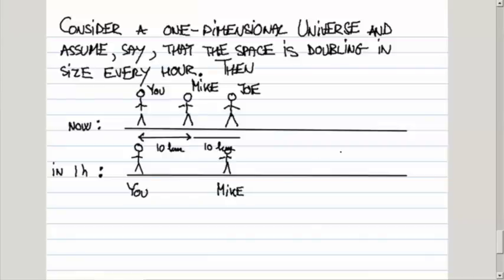And the distance between Joe and Mike has doubled in one hour. So now the distance between Mike and Joe is 20 kilometers, just like it is between you and Mike. So now the distance between you and Mike is 20 kilometers and the distance between Mike and Joe is also 20 kilometers. So what you see, you see that in one hour, Mike has moved relative to you by 10 kilometers. Your distance from him has increased by 10 kilometers in one hour.